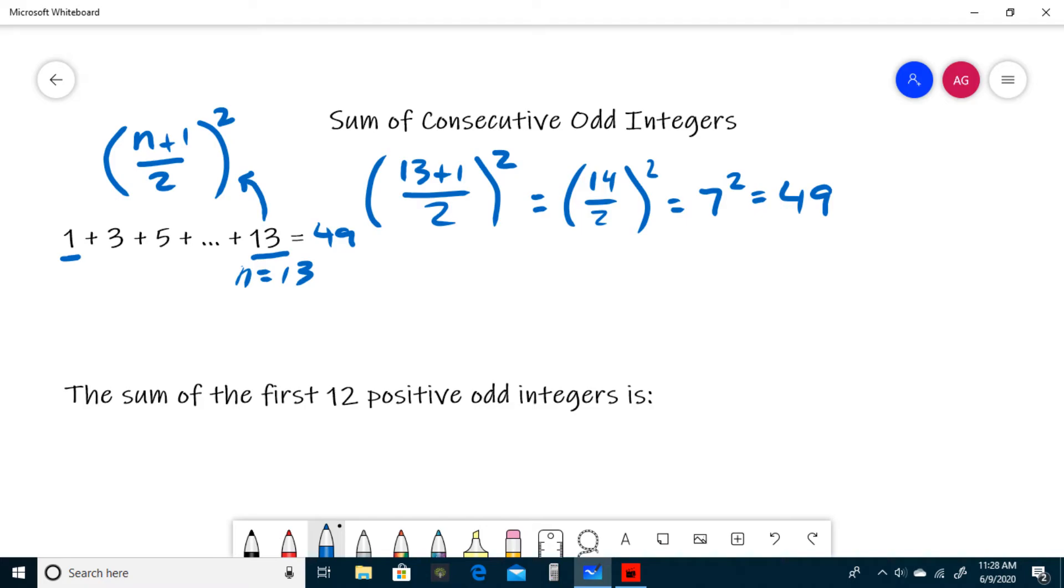Okay, now for our next example. It wants the sum of the first 12 positive odd integers. So when this happens, all you have to do is take, so in this case n is 12, you want to take this number right here and all you have to do is square it.